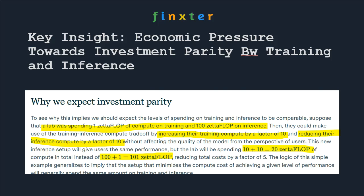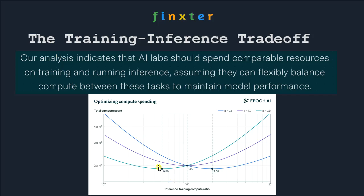This is basically what the trade-off shows us. The parameters can vary — sometimes you need to spend 10 times more on training to save 5 times on inference compute — but there will never be a runaway imbalance. There will never be a huge imbalance between the two; they are always kind of balanced.